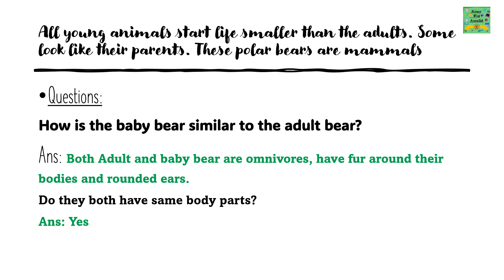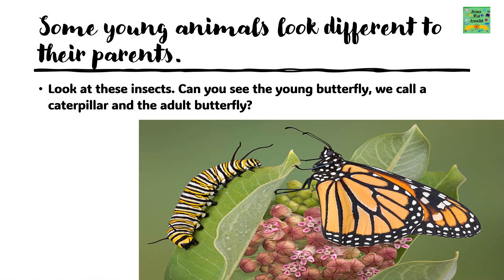How is the baby bear similar to the adult bear? Both adult and baby bear are omnivores. They have fur around their bodies and rounded ears. Do they have the same body parts? Yes.